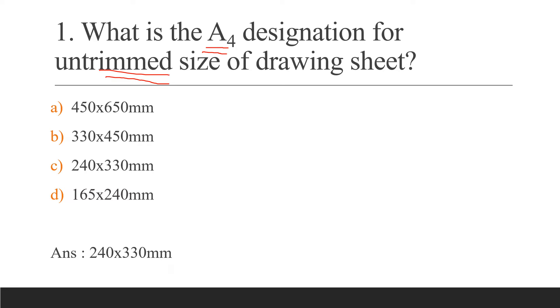The untrimmed size of A4 sheet is 240×330mm. The trimmed size is 210×297mm.